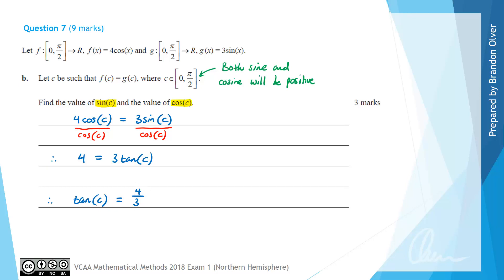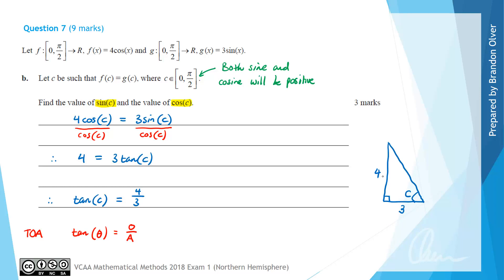Now 4/3 is an exact value we know. We can use this information to construct a right-angle triangle. The angle is C. Tan of any angle is the opposite over the adjacent — the TOA part of SOH-CAH-TOA. So the opposite must be 4 and the adjacent must be 3. Using Pythagoras' theorem, 4² + 3² = 25, so the hypotenuse is √25 = 5.